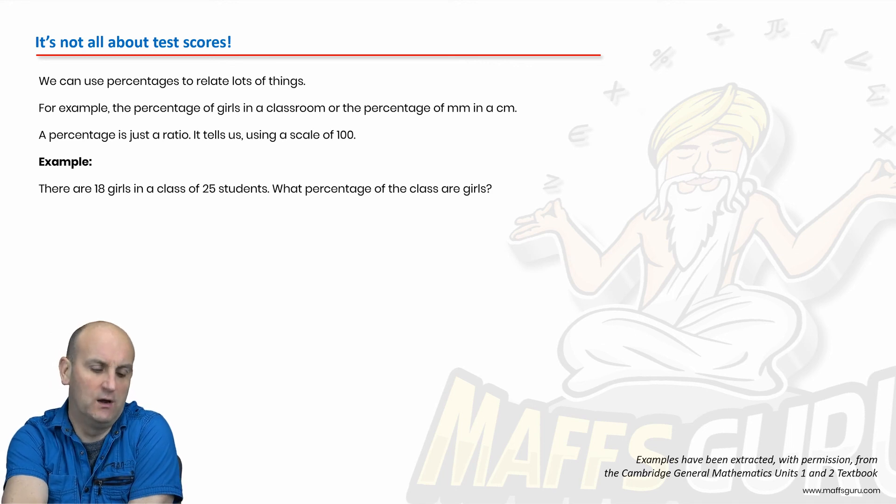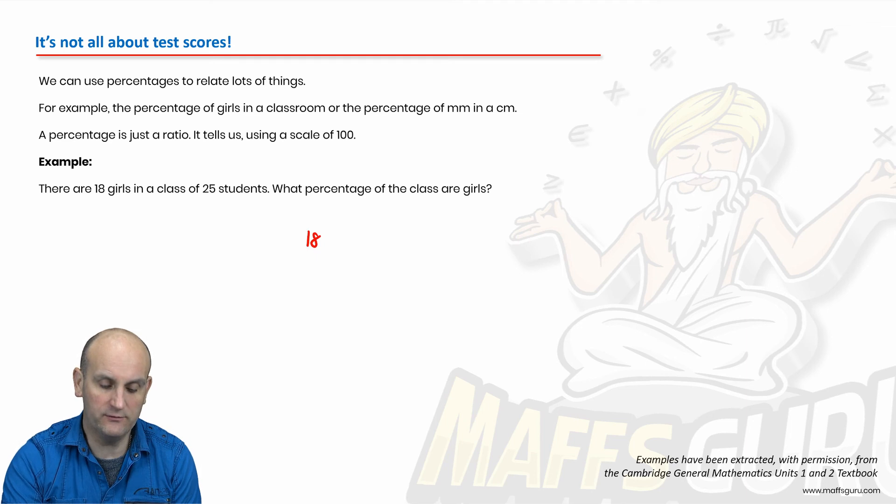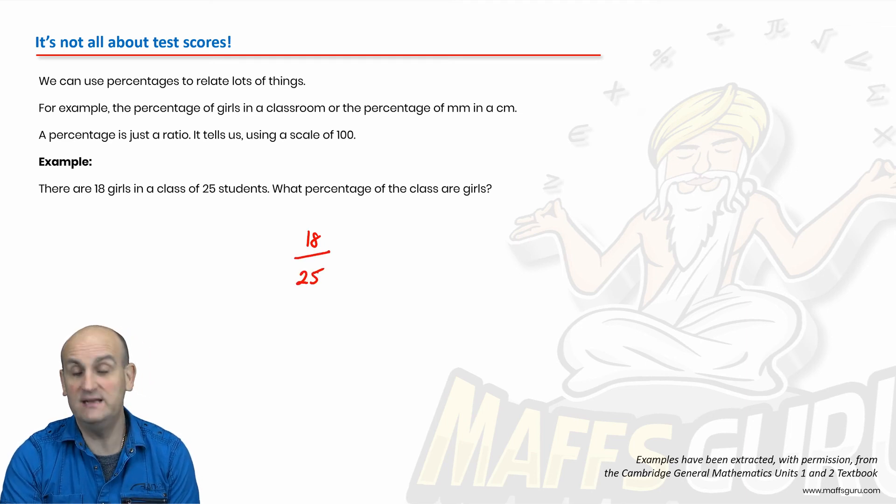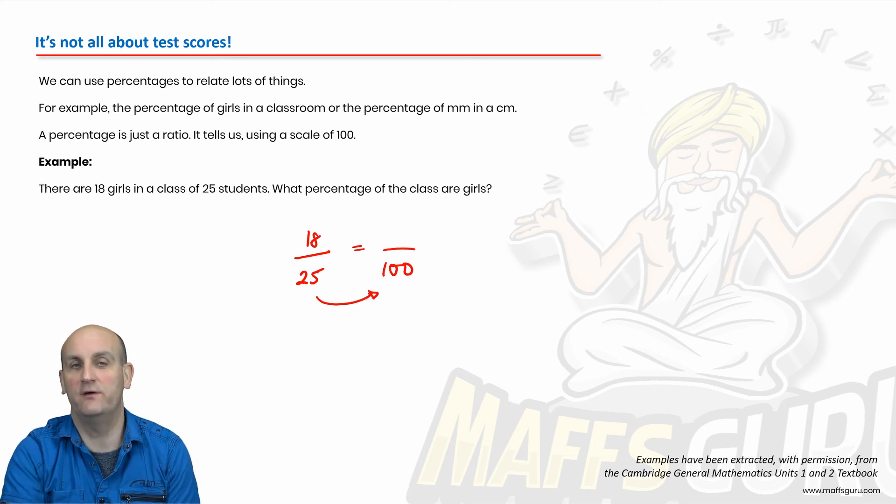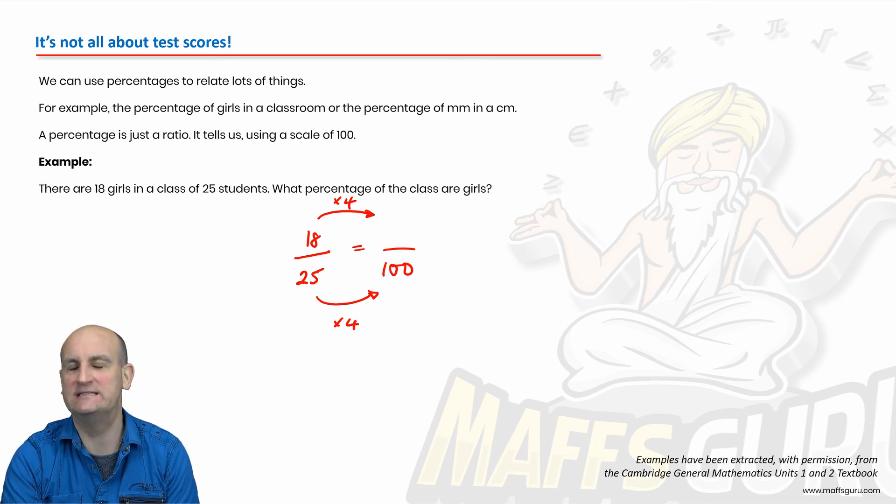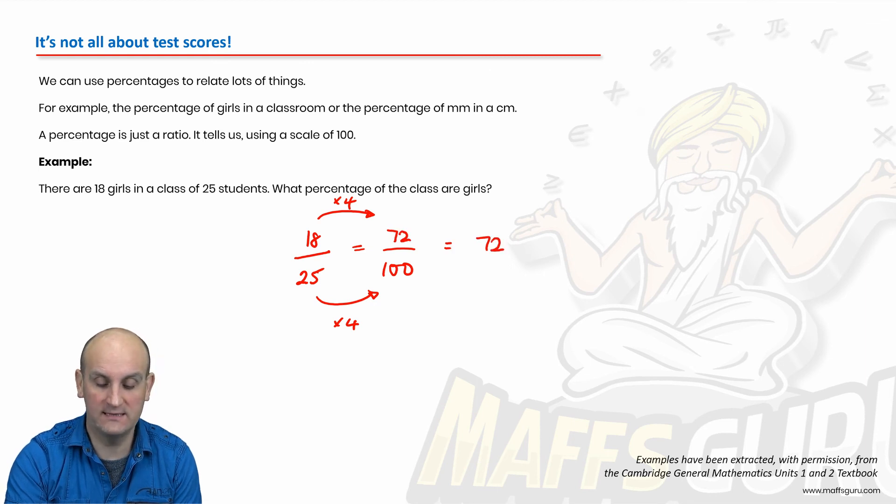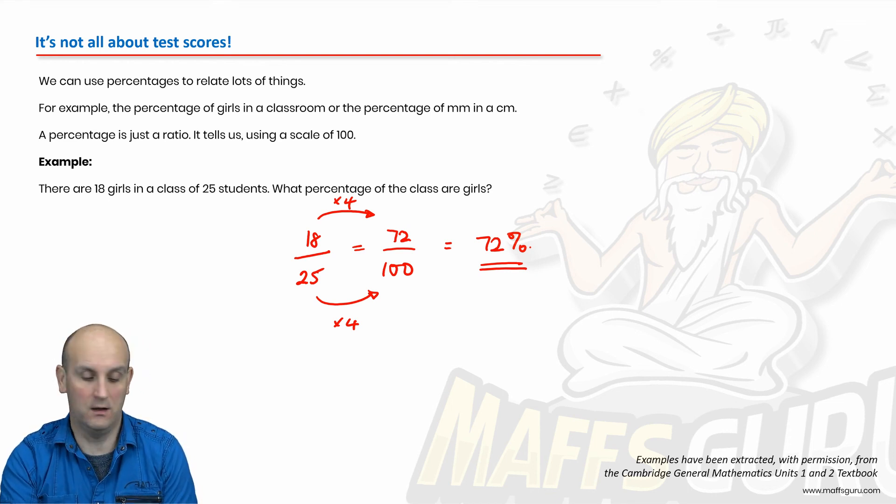Now, obviously it's not all about test scores. We can use percentages to relate lots of different things. So for example, there are 18 girls in a class of 25 students. What percentage of the class are girls? Well, in this situation, we've got 18 girls out of 25 people. So there's 18 girls out of 25. Can I use my calculator for this? I could do. But again, I want a percentage. In this situation, I can do it by hand because I know an easy way to go from 25 to 100. How? I times by 4. And if I times the bottom by 4, I times the top by 4. So 18 times by 4, 18, 36, 72 over 100, which I now know I can write as 72%. All right, so we can use percentages. There are 72% of that class are girls.